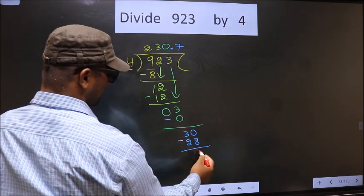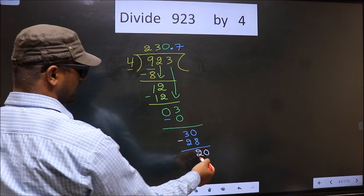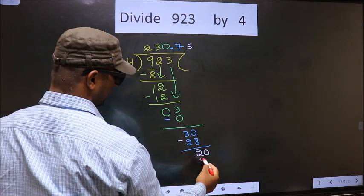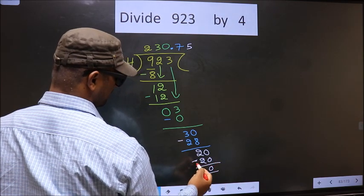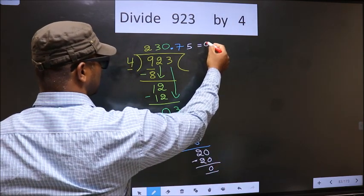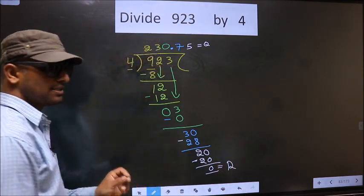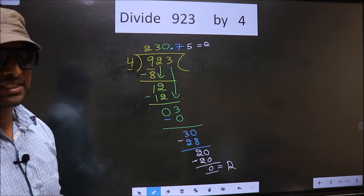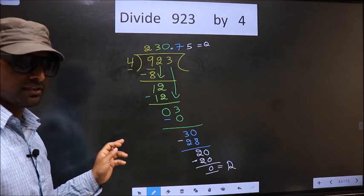Now you subtract. 30 minus 28, you get 2 decimal already there. You take 0. When do we get 20 in 4 table? 4 5's, 20. So you subtract, you get 0. So this is our quotient and this is our remainder. Did you understand where mistake happens? You should not do that mistake. Am I clear?